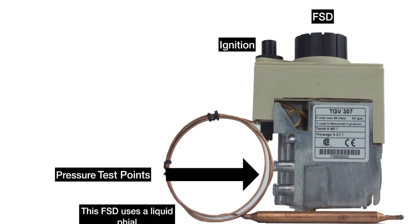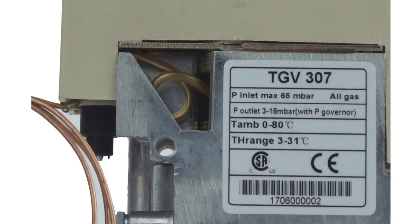And the pressure test points on this particular multifunction valve are those two, look like bolts sticking out. One, you put your U gauge on, and it's the inlet pressure, and the other is the burner pressure. If you look at the side of the valve, it actually tells you the maximum inlet pressure that this valve can take is 65 millibars. And the range of pressure outlet, which is the burner pressure, is between 3 and 18 millibars.